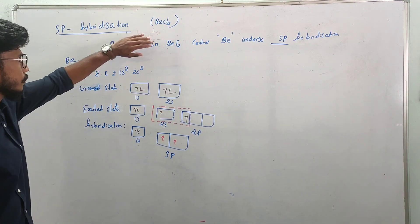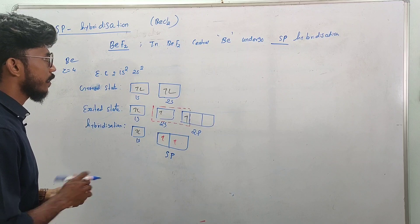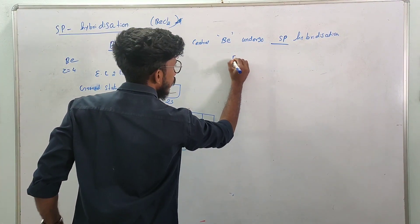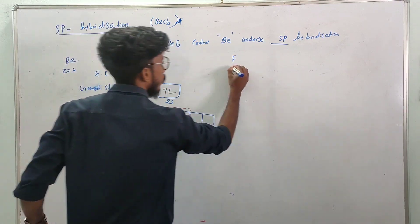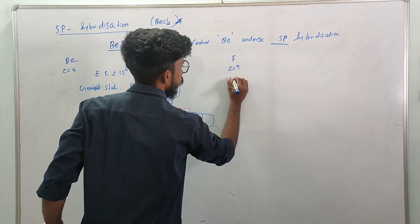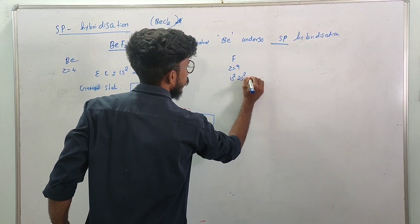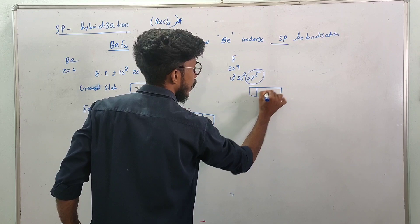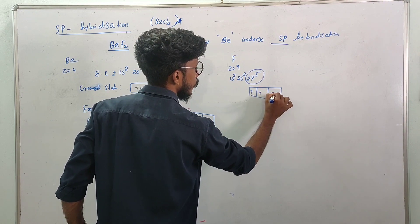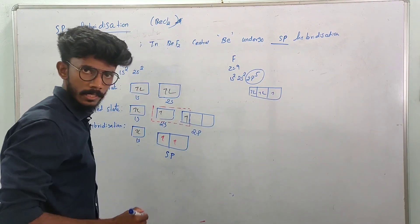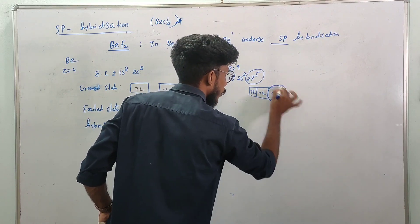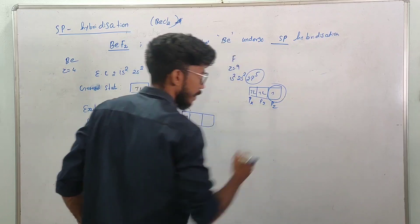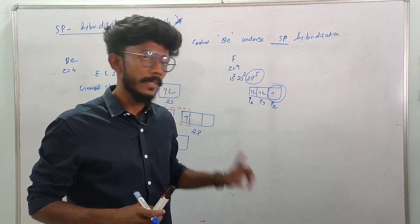To form the compound beryllium fluoride, we look at fluorine. Fluorine's atomic number is 9, so the configuration is 1s2, 2s2, 2p5. The p orbital has 5 electrons distributed across px, py, and pz. One of these p orbitals has only one electron — an unpaired electron.